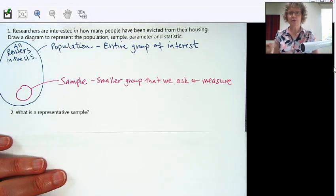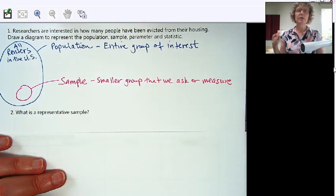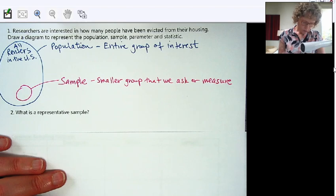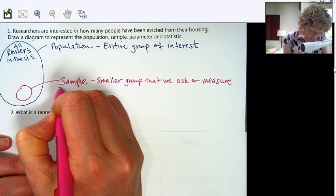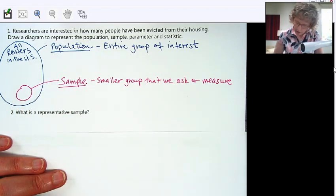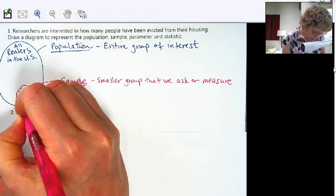And the sample is a smaller group that we're going to ask or measure. Could be a survey, which is why I say ask, or our population may not even be people. It could be car parts or tomato plants, and so we might be measuring some characteristic or we might be giving a survey. Okay, so we've got population and sample. For our example,